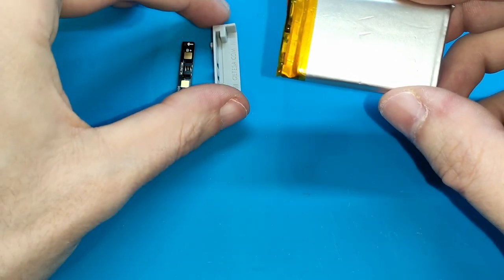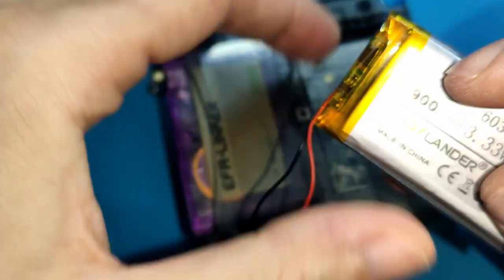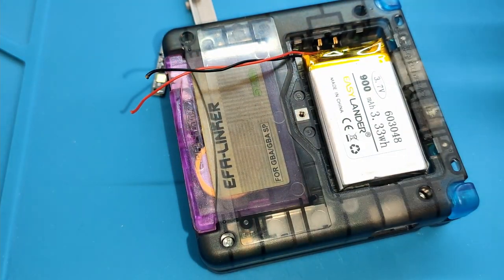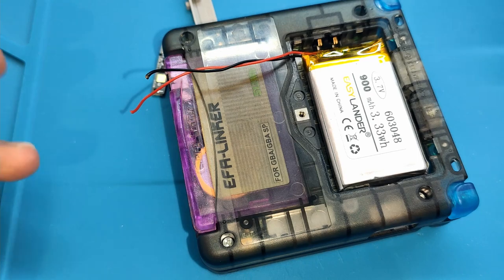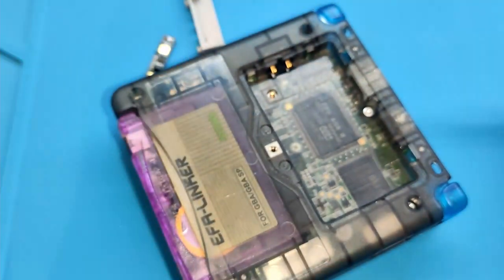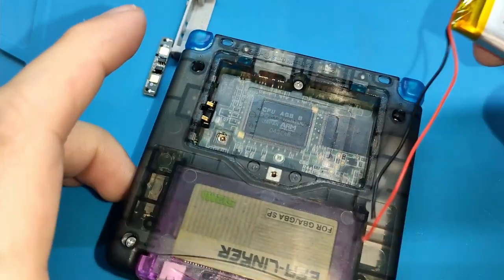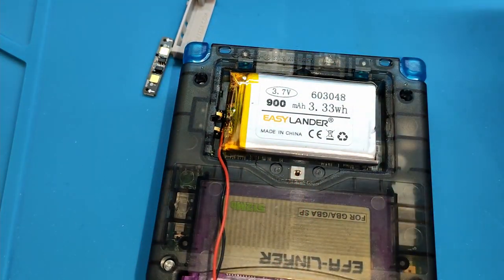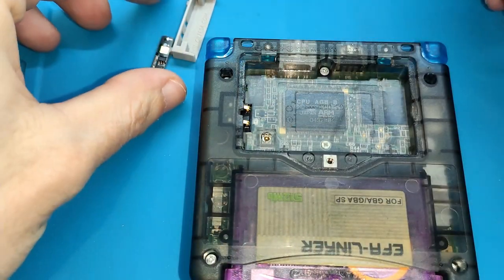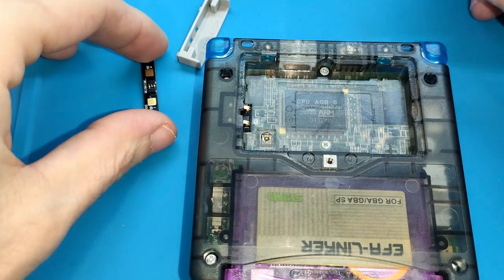And why we need this adapter? Because we cannot connect this battery here directly. We need something else. We can, if we want, solder these cables directly to the SP. I think it's not a good idea. Or we can use a board like this one.